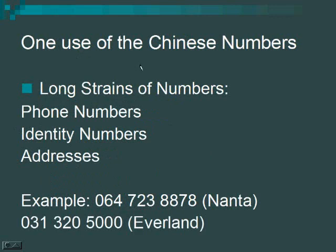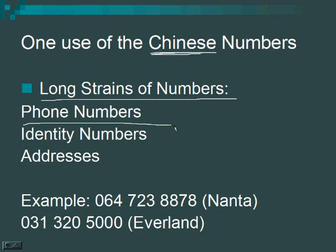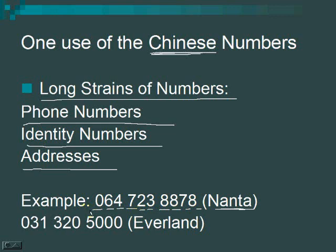One big use of the Chinese numbers is long strings of numbers — phone numbers, identity numbers, addresses. For example, the Nanta Theater phone number uses the Chinese system: 공, 육, 사, 칠, 이삼, 팔, 팔, 칠, 팔.